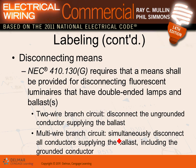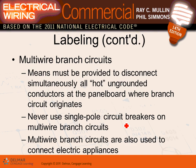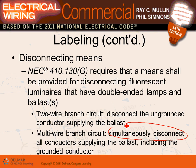Disconnect means: in 2008 they started requiring all double-ended fixtures — fluorescent T5 and T8 — to have a disconnect, because electricians were climbing ladders to change ballasts and getting zapped by 277 volts. The code now requires all these fixtures, with some exceptions, to have a disconnect means to disconnect the ballast. If it's a multi-wire branch circuit, you also have to simultaneously disconnect the neutral. These disconnects go right inside the fixture — when you open it to change the ballast, you unplug it, the fixture is dead, and it's safe to work on.